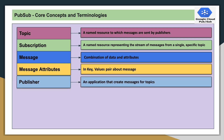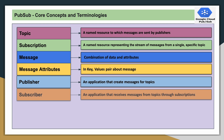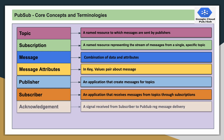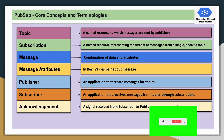Then publisher — this is the application that is going to publish messages or data to the PubSub topic. And then subscriber is the one who is going to receive that data for further processing. And then acknowledgement — this is a signal which is sent by the subscriber to PubSub indicating whether the message has been successfully delivered or not.